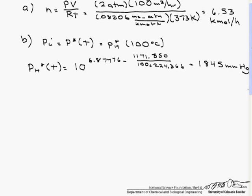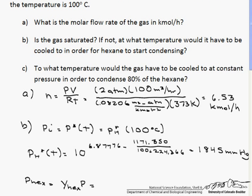So now what we have to find out is what our partial pressure is, and whether this equals 1845. So our partial pressure of hexane is going to be the y, the mole fraction of hexane times the total pressure. And we are given, if you take a look back here, that the mole fraction is 0.15.